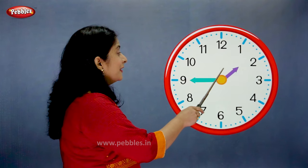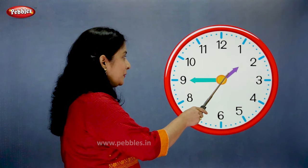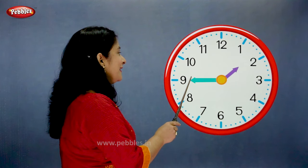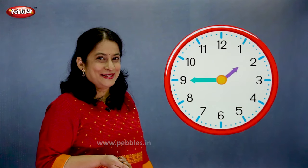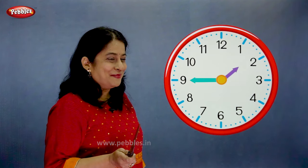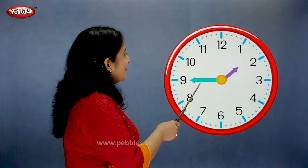The hour hand is moving towards 2. The minute hand is on 9. So what is the time? Come on, tell me. Correct — the time is quarter to 2.